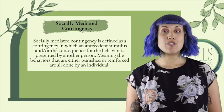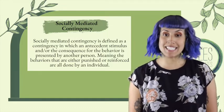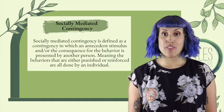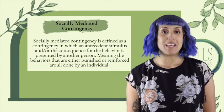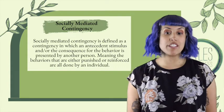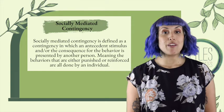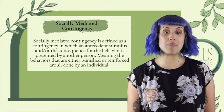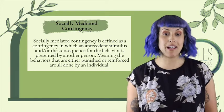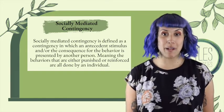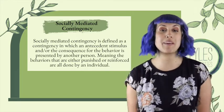When we're discussing socially mediated contingencies, this is defined as a contingency in which the antecedent stimulus and/or the consequence for the behavior are reinforced by another person — meaning that behaviors that are either punished or reinforced are all done by another individual. For example, let's say that I ask for help when I'm lifting a really heavy box. Another person comes along and picks up the item, so my behavior of asking for help is reinforced by that other person also lifting the object.